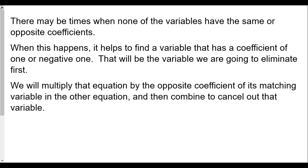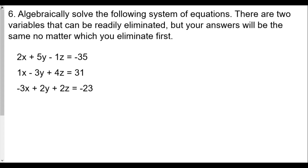We will multiply that equation by the opposite coefficient of its matching variable in the other equation, and then combine to cancel out that variable. Looking at our equations, the first equation has negative 1z, and the second equation has positive 1x. So we can choose either z or x to eliminate — either one's fine. Let's try eliminating x in this case.